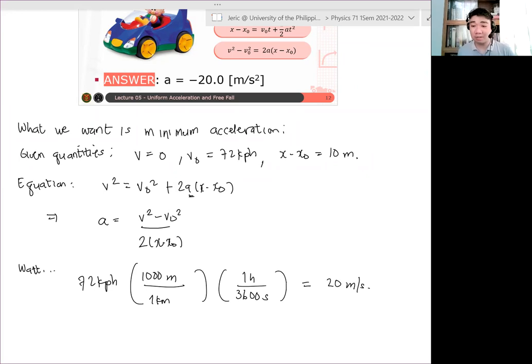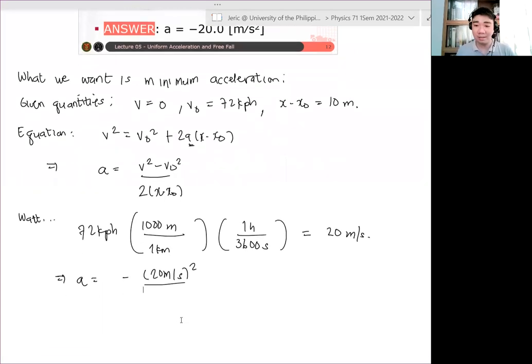And when we do that, we substitute our equation. Thus we get a is just negative of 20 meters per second in a square all over twice ng 10 meters, and what you get here is negative 20 meters per second square, which is our answer.